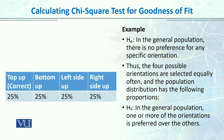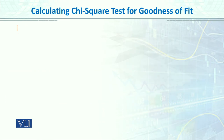These are the observed frequencies. The null hypothesis states that in the general population there is no preference for any specific orientation — meaning frequencies are equally distributed across each category. Thus, the four orientations are selected equally often, with 25% expected in each category. The alternative hypothesis states that one or more orientations is preferred over the others.